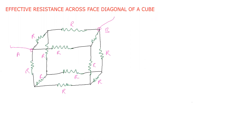Let us take a face where a and b are the face diagonal points. We connect a and b to the battery. By connecting the battery here, current is drawn from the battery and enters at point a.